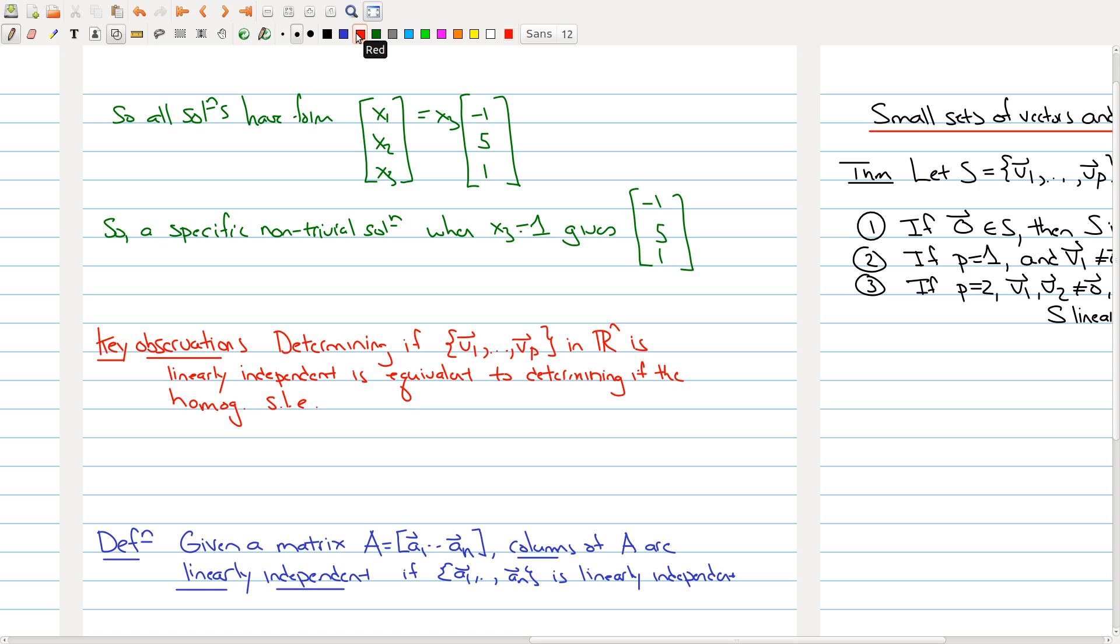It's equivalent to determining if the following homogeneous system has only the trivial solution: you make a matrix where the columns are your vectors v1 through vp, and you're multiplying it by the vector x equals 0. So we see that being a homogeneous system of linear equations and looking at the number of solutions is tied to this notion of linearly independent.